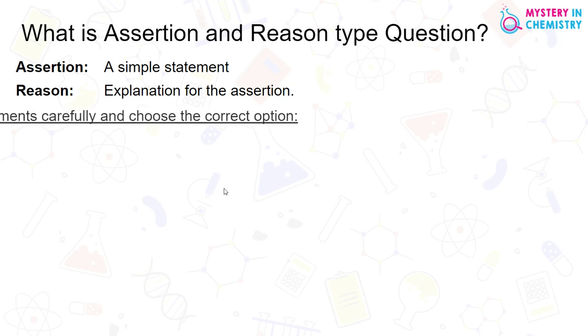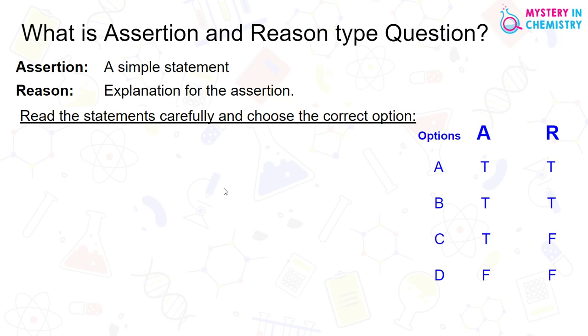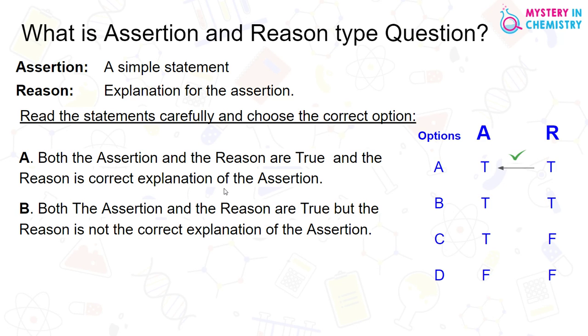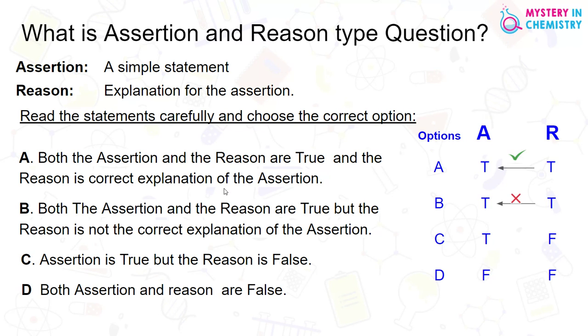Read these statements carefully and choose the correct option. Options will be: Option A is both the Assertion and Reason are true and the Reason is correct explanation of Assertion. Option B is both the Assertion and Reason are true, but the Reason is not the correct explanation of Assertion. Option C is Assertion is true, but the Reason is false. And Option D is both Assertion and Reason are false.